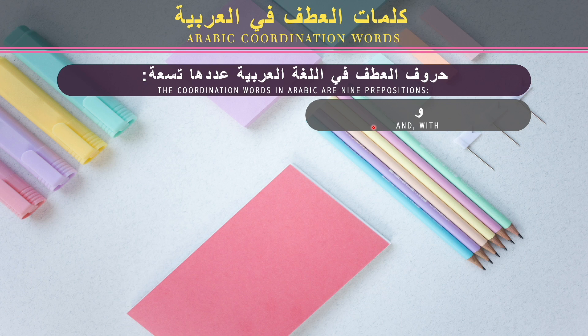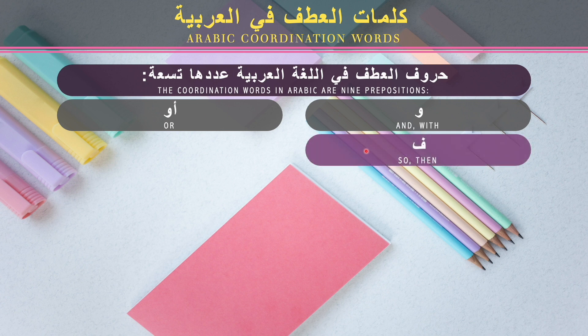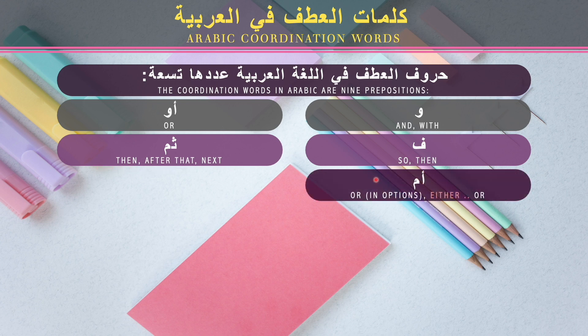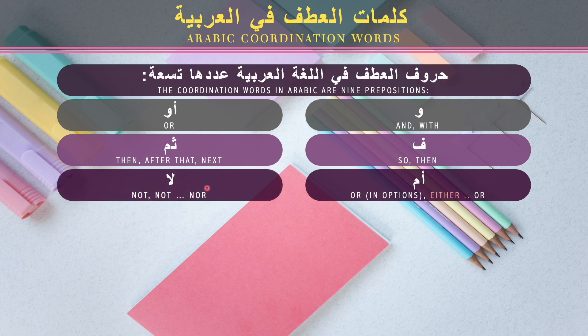There are 9 coordination prepositions. The first is و, meaning 'and' — and sometimes, rarely, 'with'. Then أو, meaning 'or'. Then ف. Then ثم — in my Saudi dialect we say ثم or ثم depending on the region — meaning 'then', 'after that', 'next'. Then أم, meaning 'or' when you have options, especially in questions — either/or.